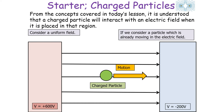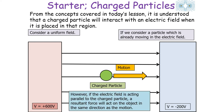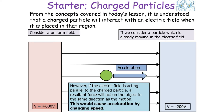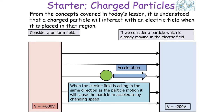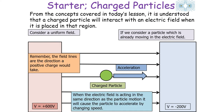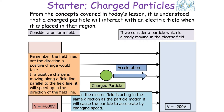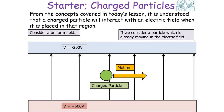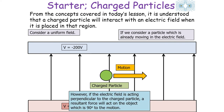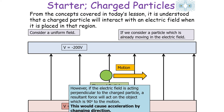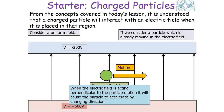If a particle is already moving in the electrical field, it has inertia and wishes to continue in its motion. If the electrical field acts parallel to the charged particle's motion, the resulting force acts in the same direction as the motion, causing the object to accelerate by changing speed. A positive charge moving parallel to field lines speeds up in the direction of the field line, whilst a negative charge moving parallel to field lines speeds up in the opposite direction. If the electrical field acts perpendicular to the particle's motion, a resulting force acts 90 degrees to its motion, causing acceleration by deflection — acting like a centripetal force.